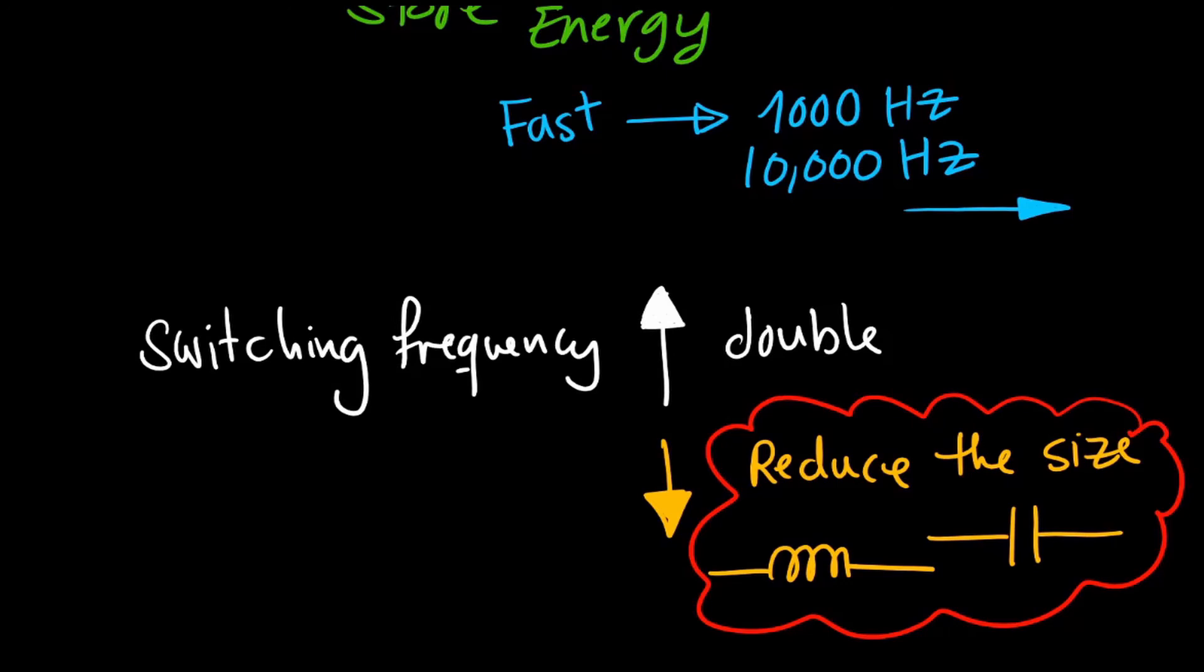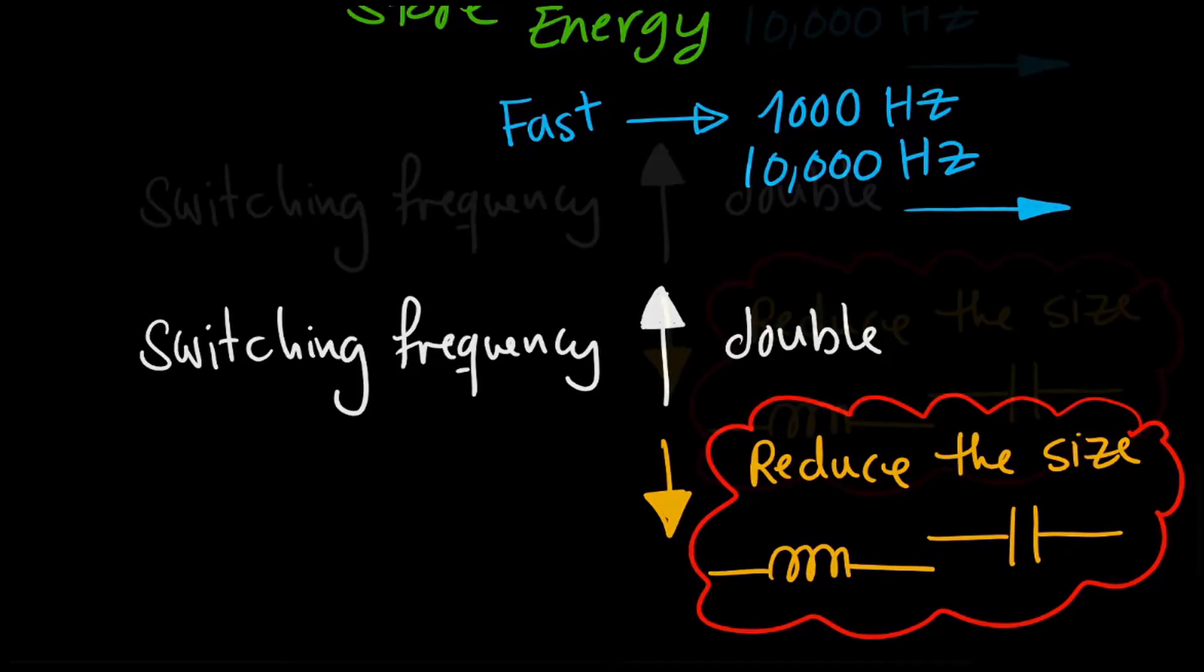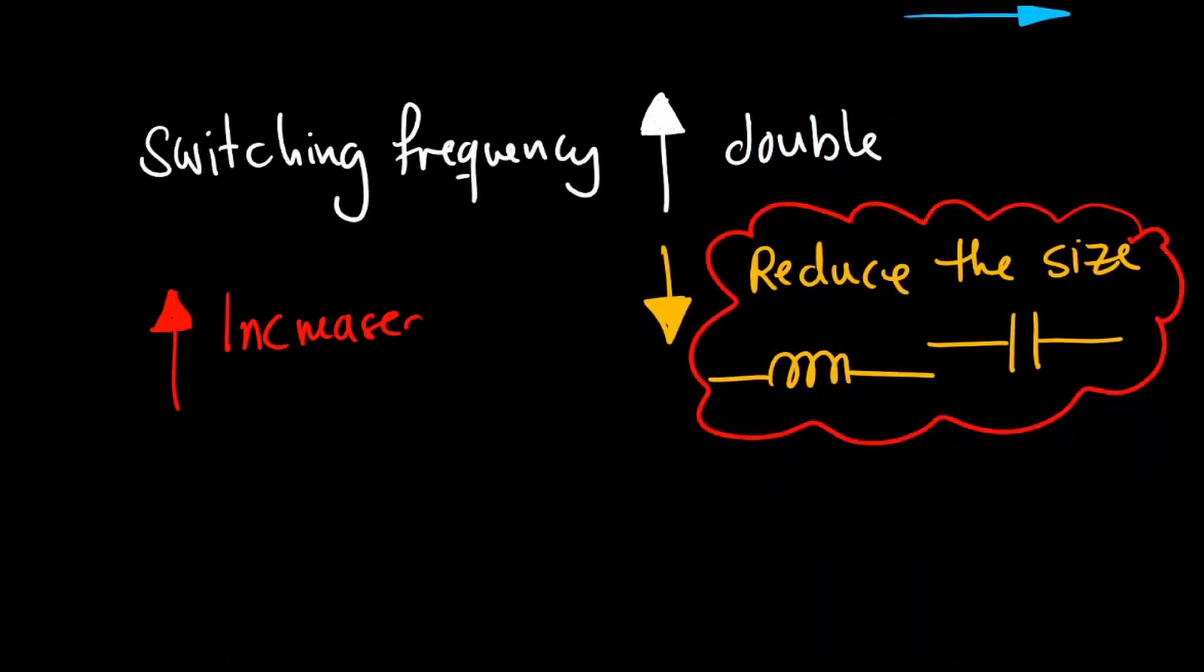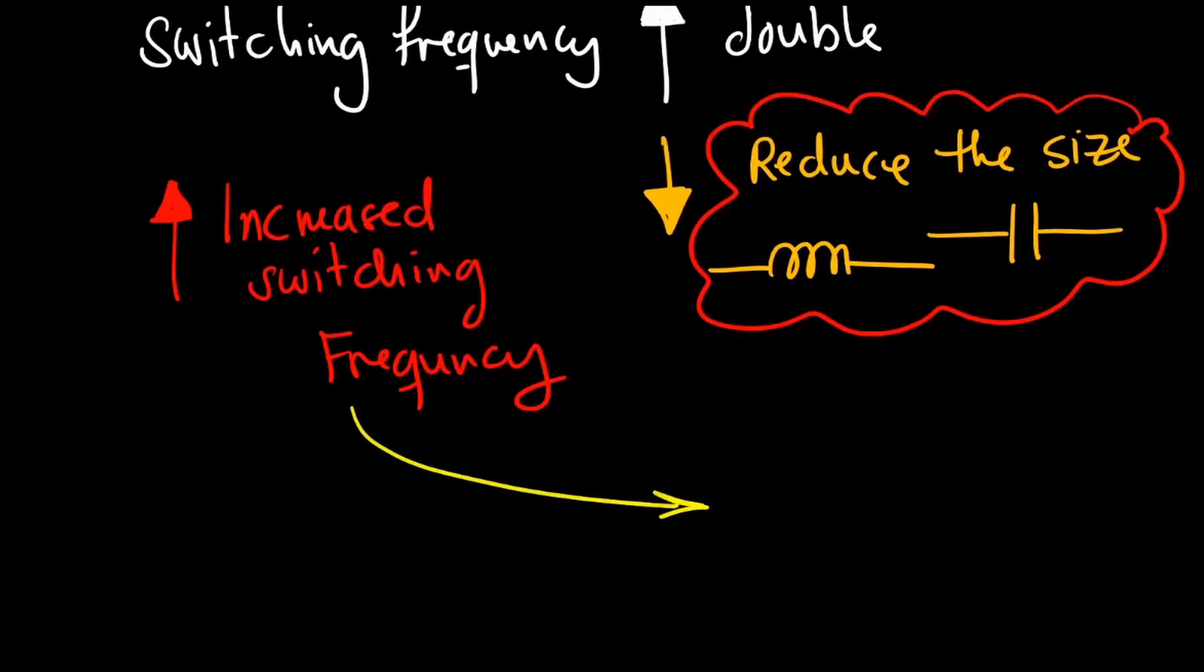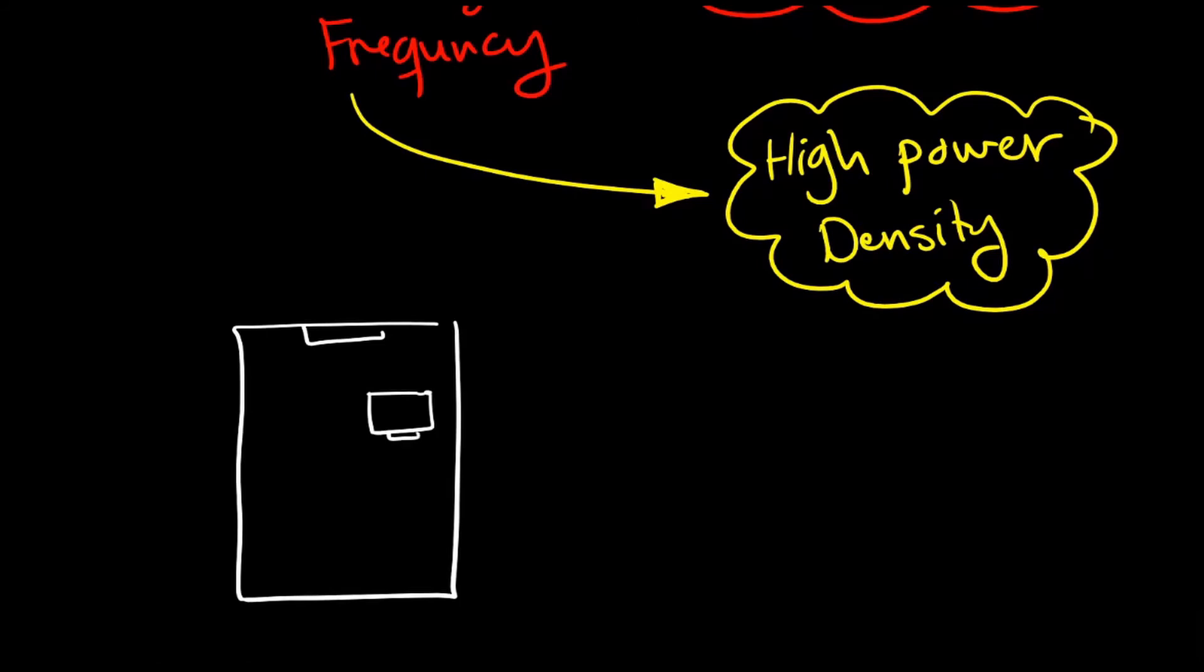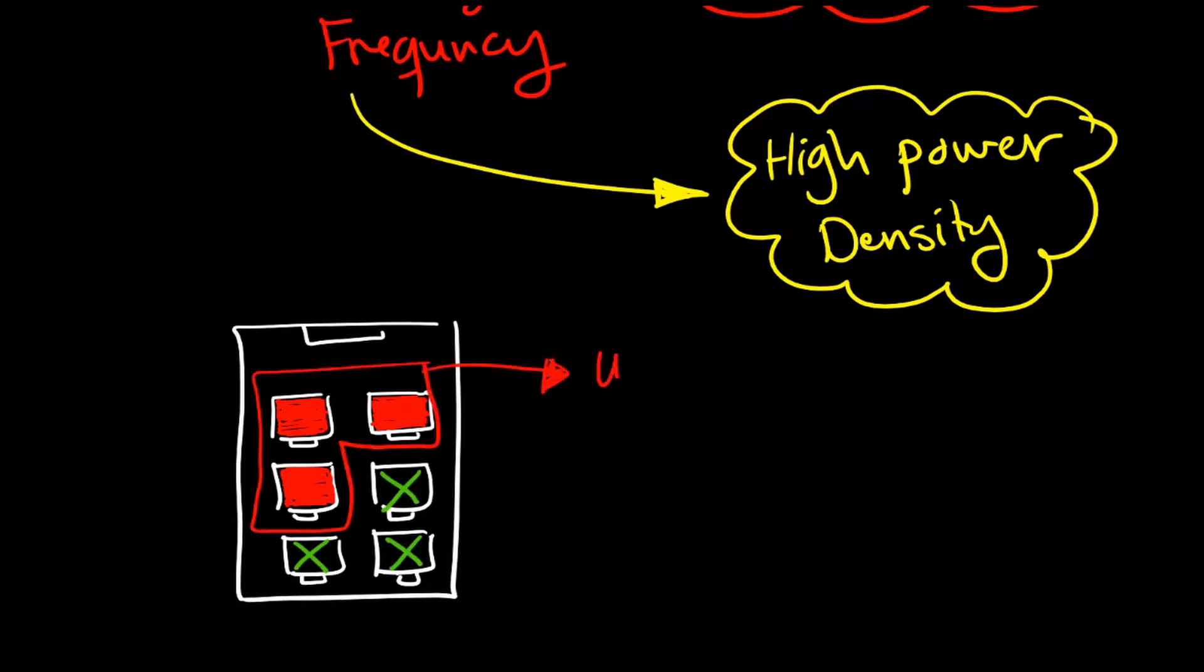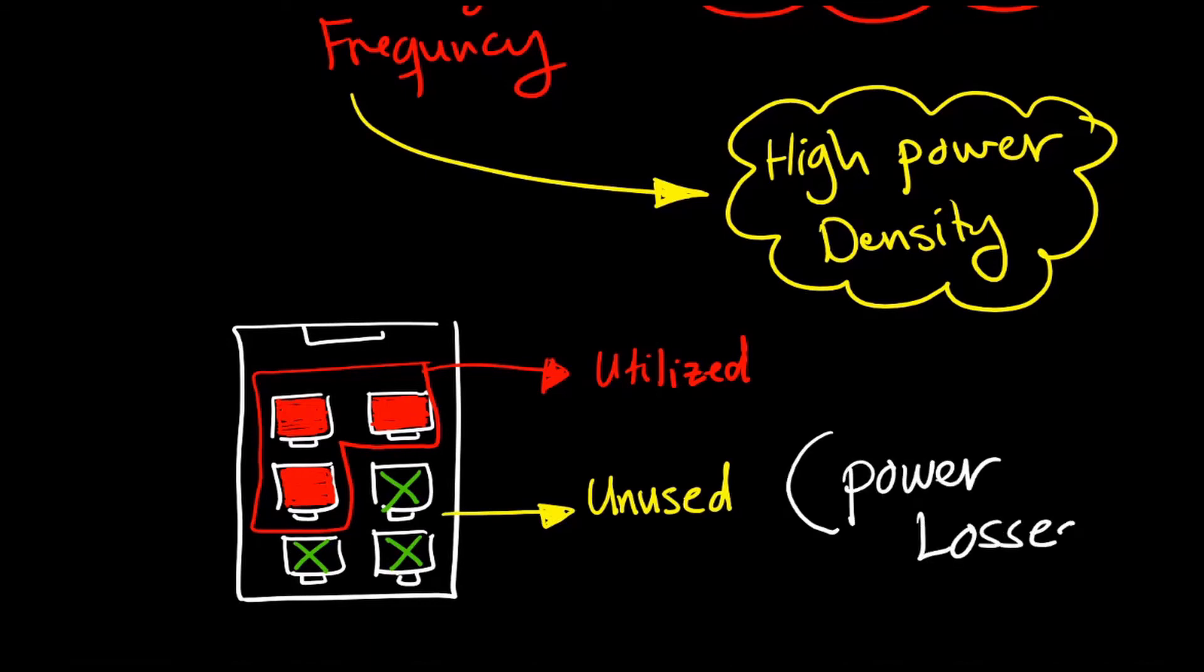What happens if we keep the same elements without changing the size? The same thing happens in the classroom. If we have a room of 6 student capacity and double the frequency, this means we will use only three spaces and will keep other three places unused. These unused resources are translated to power losses inside the power converters.